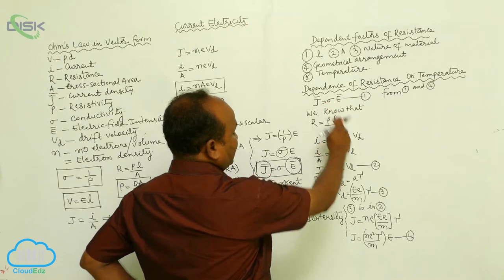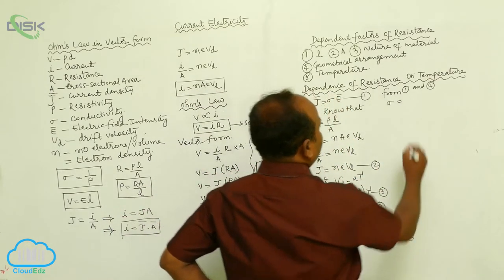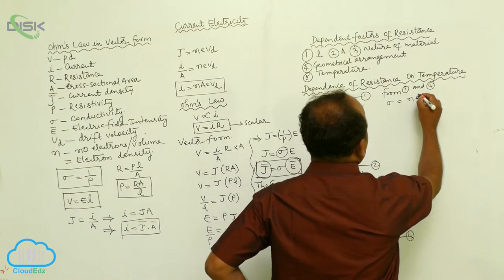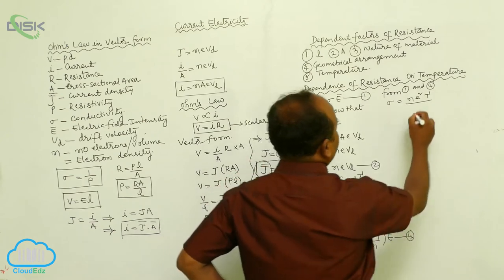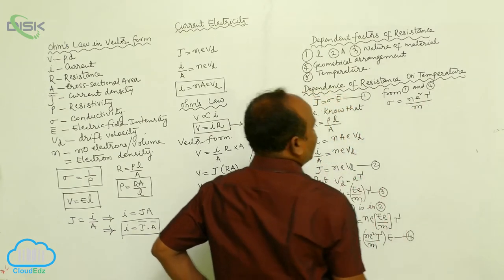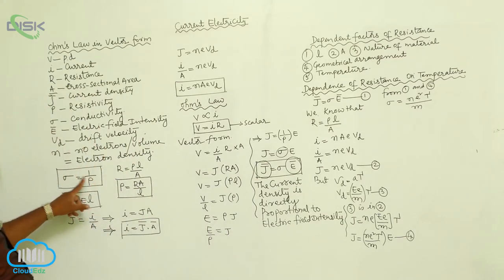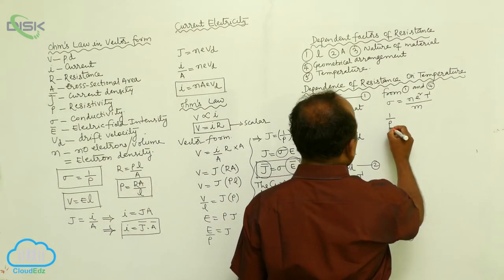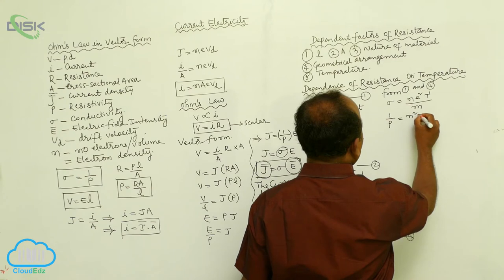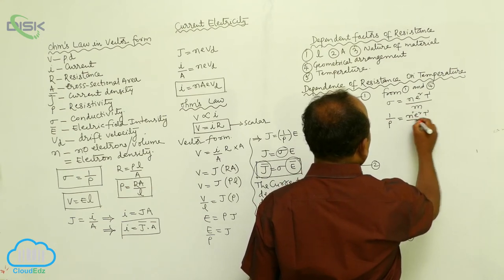In the case of conductivity, sigma is equals to N E square into tau by M. Now, sigma is equals to 1 by rho. Therefore, 1 by rho is equals to N E square into tau by M.